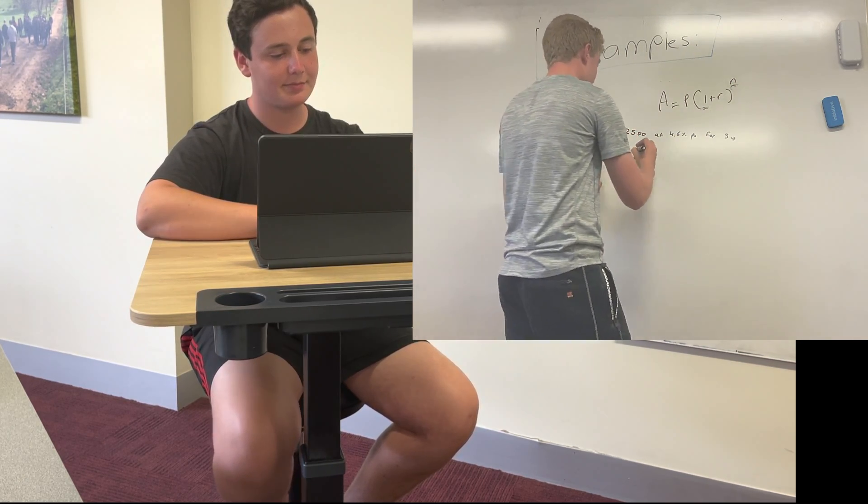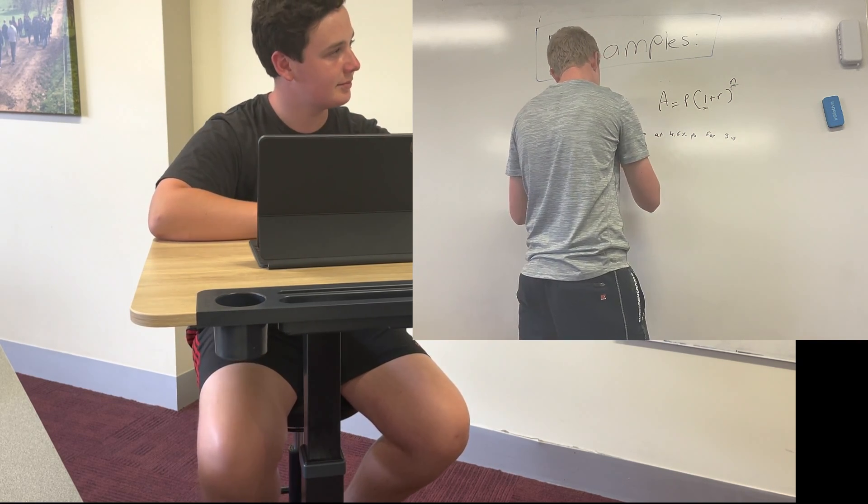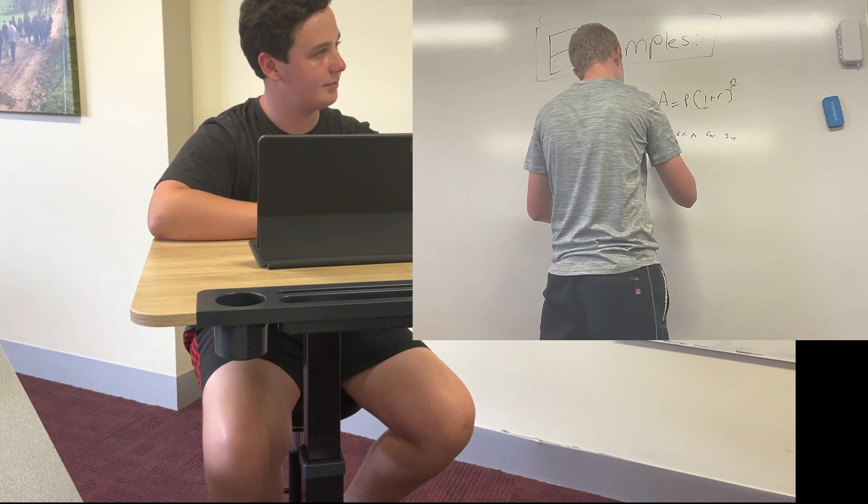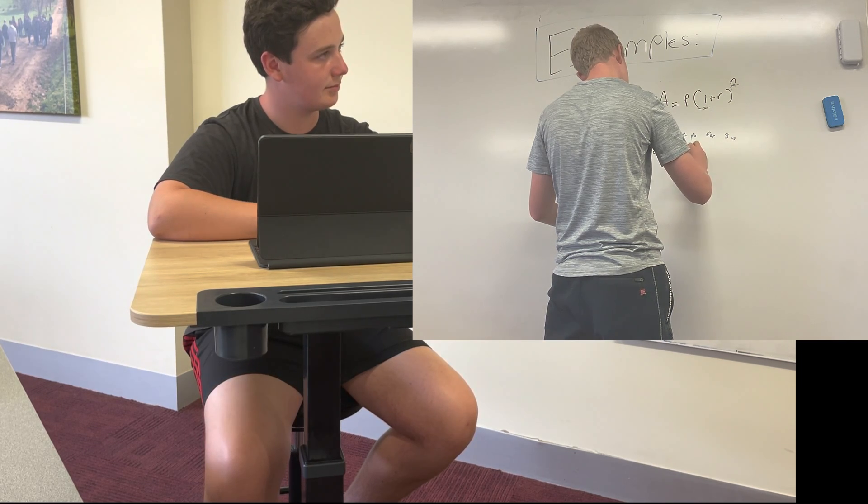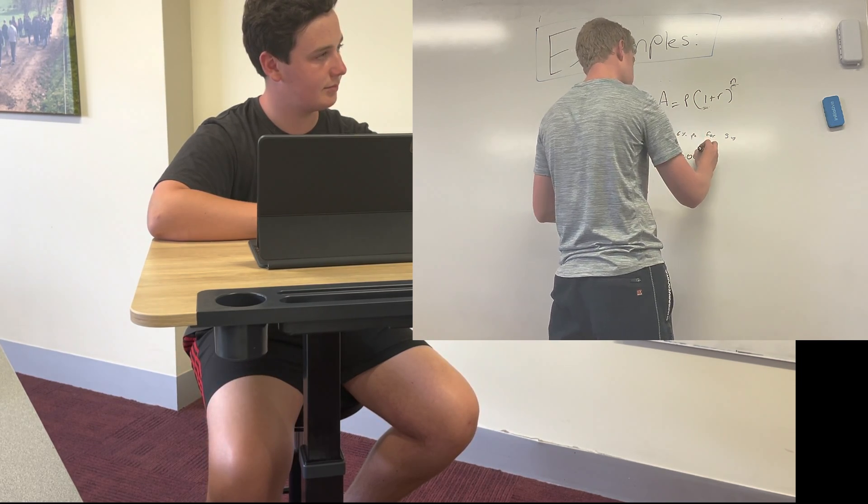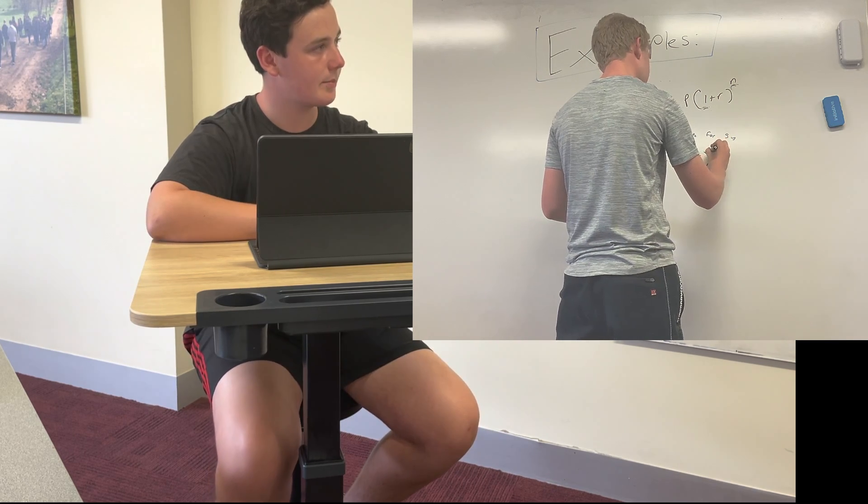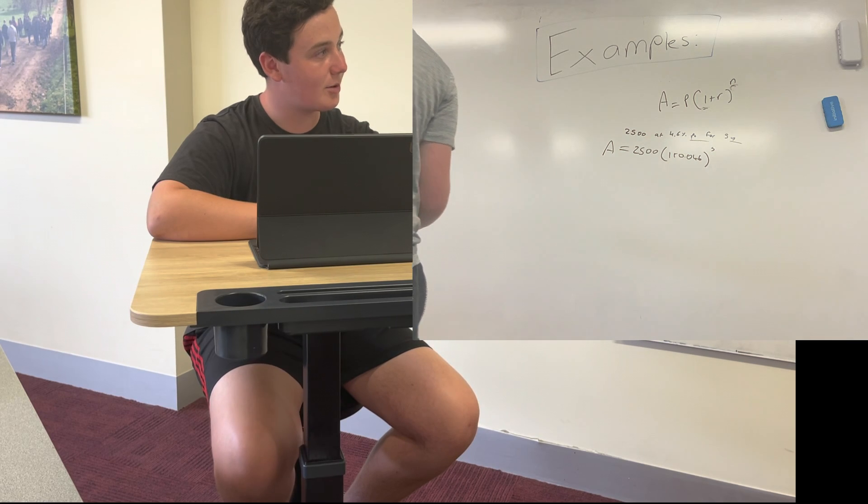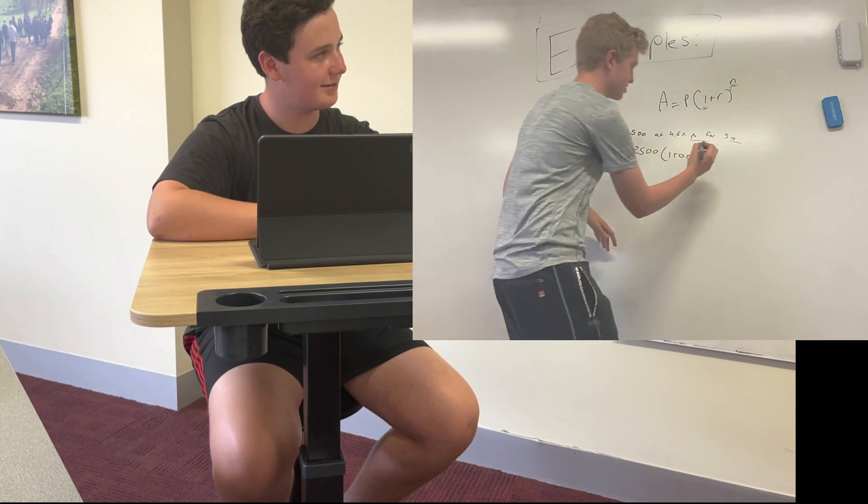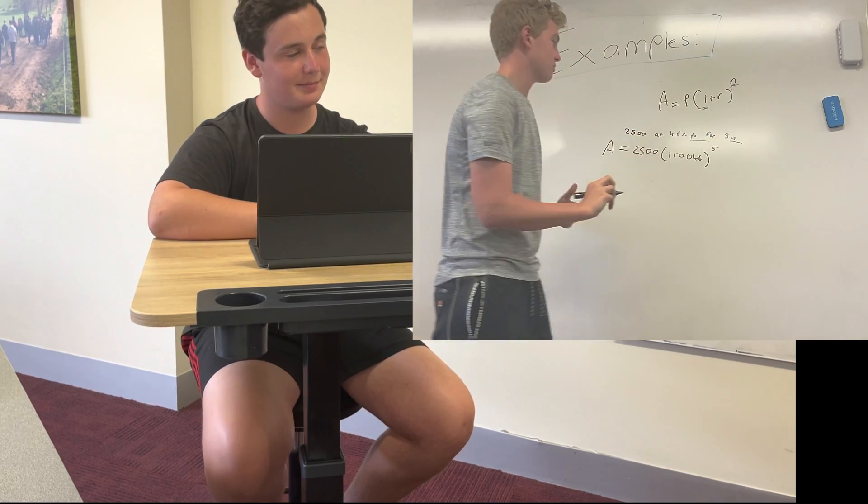Alright so what we're going to do here we're going to go A is going to be equal to $2,500 times one plus 0.046 because that's that interest rate for five years. Again because years matches there. You've got the top of the five. What did I forget? The top of the five. The top, oh sorry, it's just years.